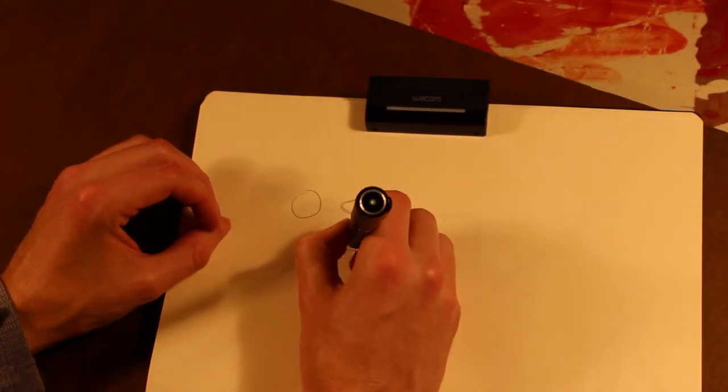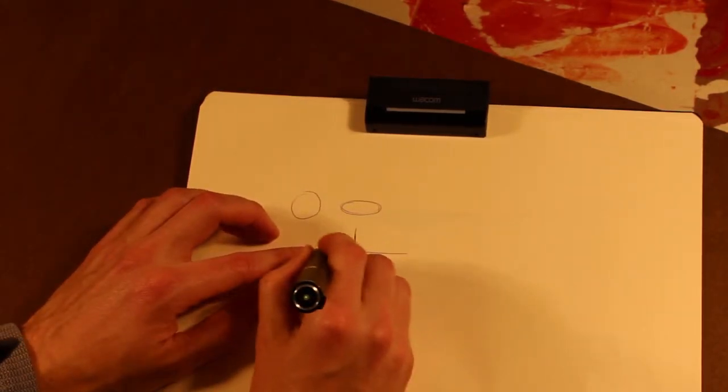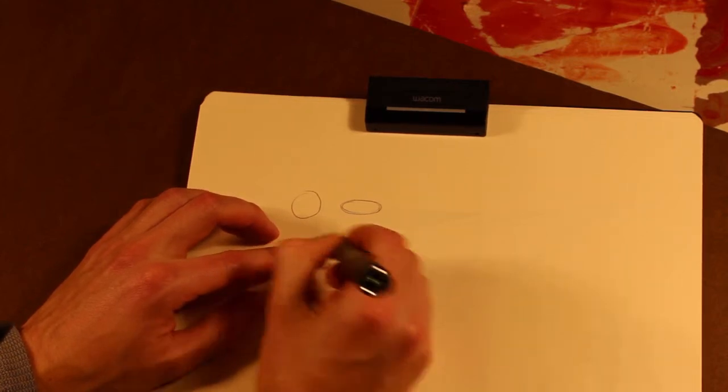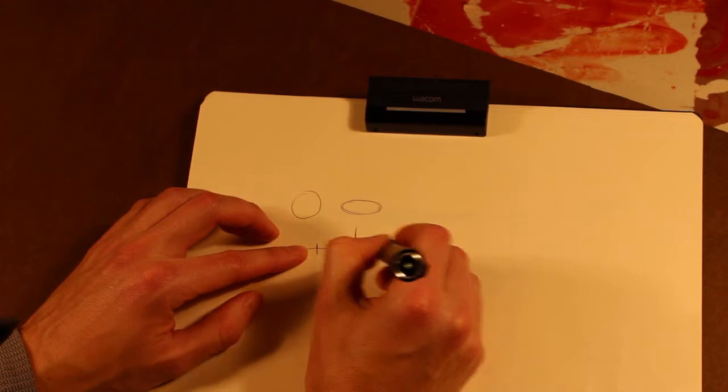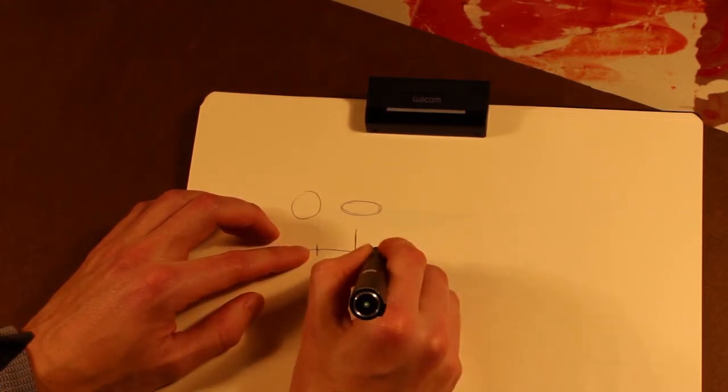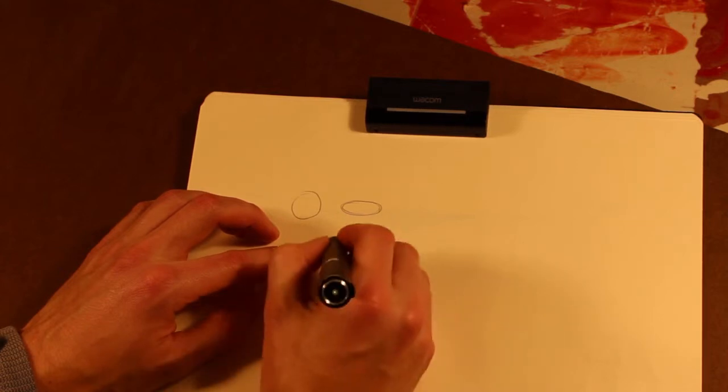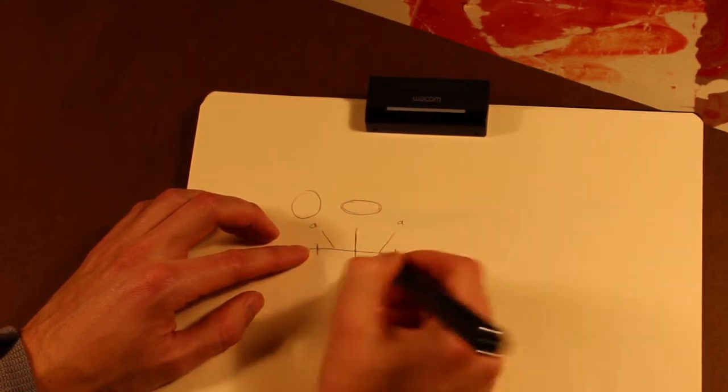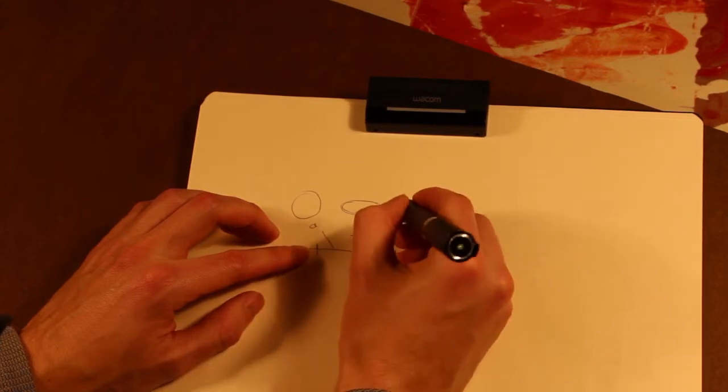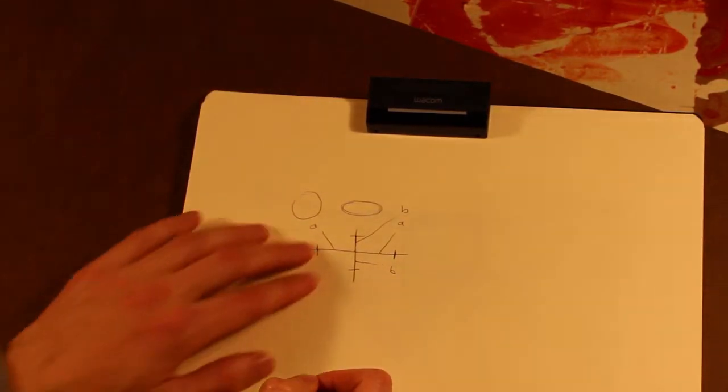So if my ellipse is here, I know that this distance has to be the same here. So these two distances are exactly the same. This is distance A and this is also distance A. This is distance B, this is also distance B.